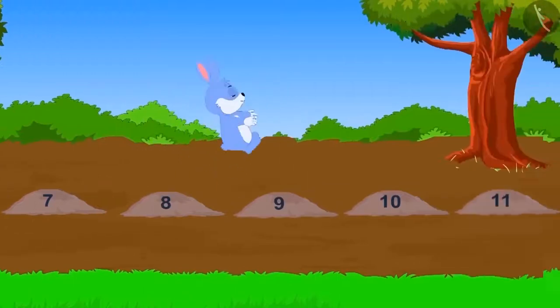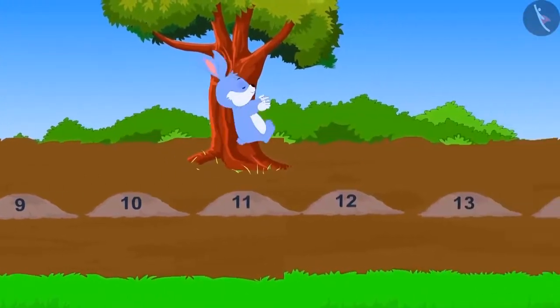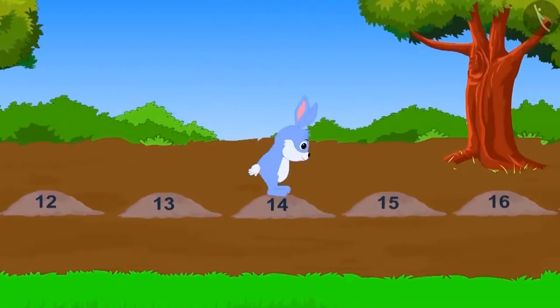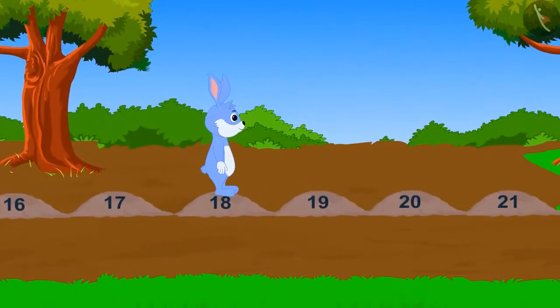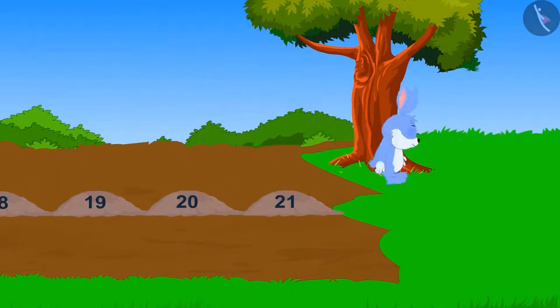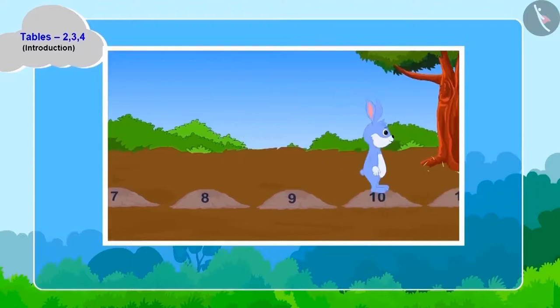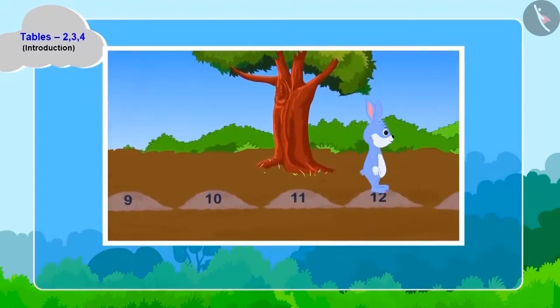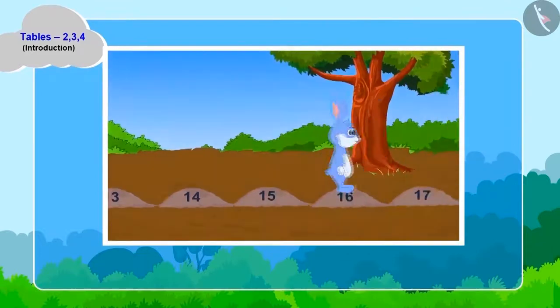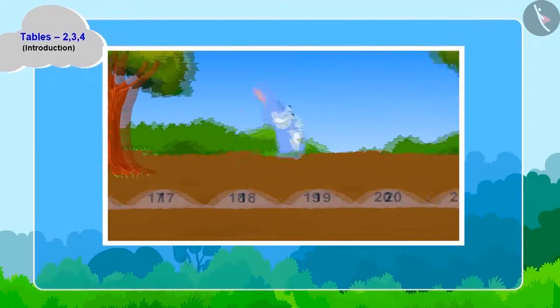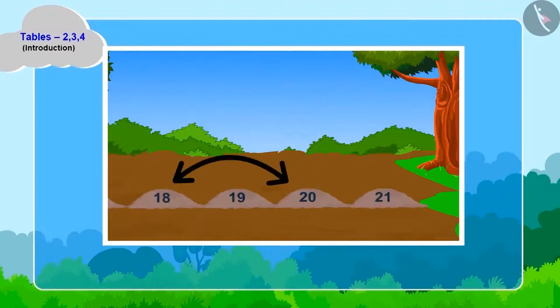This way, jump after jump, bunny moved two steps ahead in every jump and in the end, crossed over to the other side of the swamp from the twentieth stone. Children, do you find something unique in bunny's jumps? Two is being added to every jump of bunny.